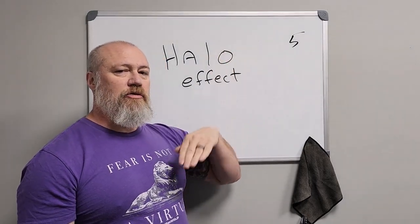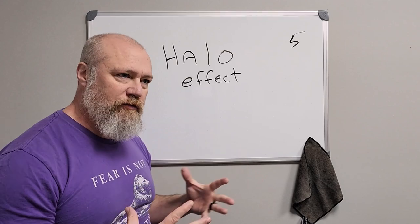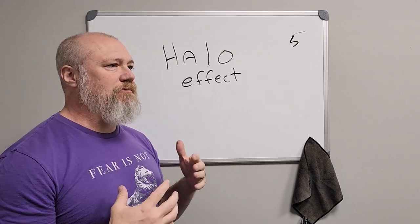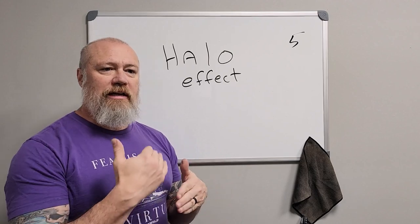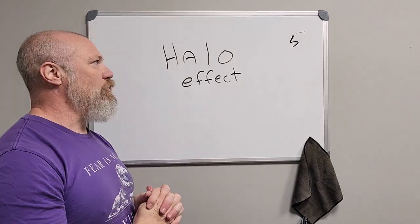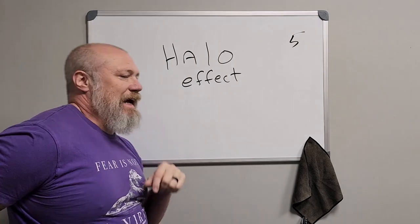Number five in the cognitive distortions playlist and things to start looking for in yourself so that you can be aware of these common biases or distortions and keep taking that step toward a more mature rational mind wisdom is the halo effect.